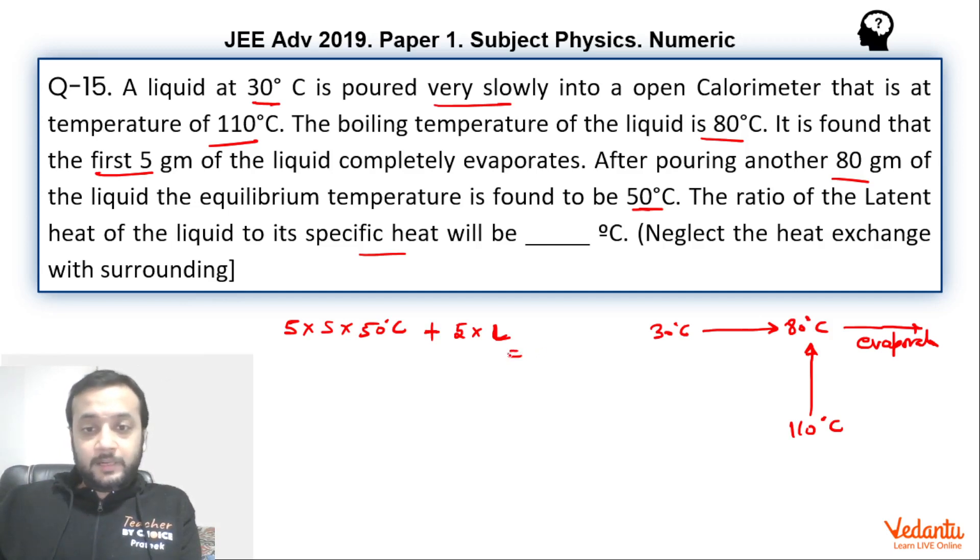This heat will be provided by the calorimeter. So calorimeter has come from 110 to 80. Let us say that heat capacity of the calorimeter is C. I am saying heat capacity not the specific heat. So heat capacity is C.